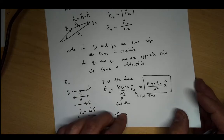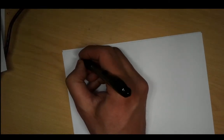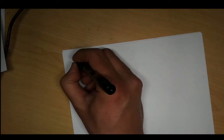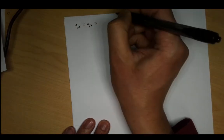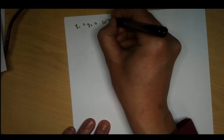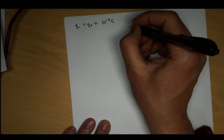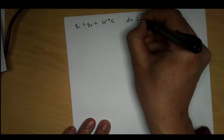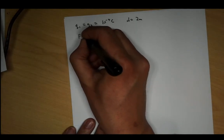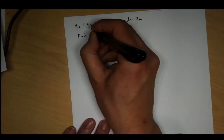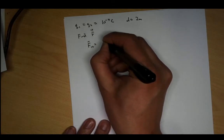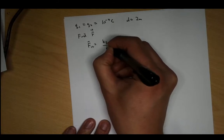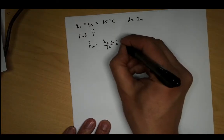Now let's plug in numbers. Let Q1 equal Q2 equal 10 to the minus 4 Coulombs, and let the distance D equal 2 meters. We need to find the force. From what we did earlier, F12 equals K times Q1 times Q2 over D squared times x-hat. K is 9 times 10 to the 9 Newtons meters squared per Coulomb squared.